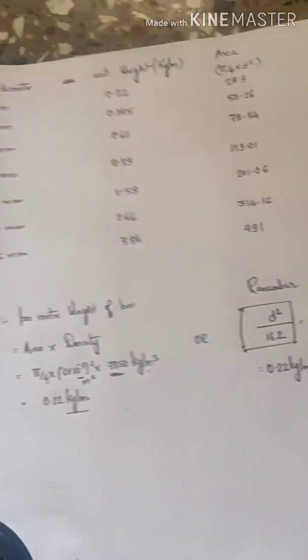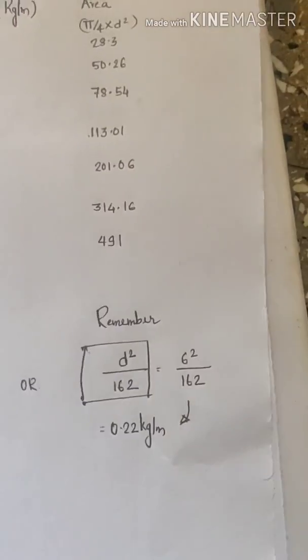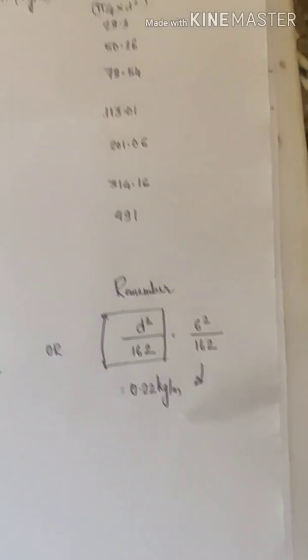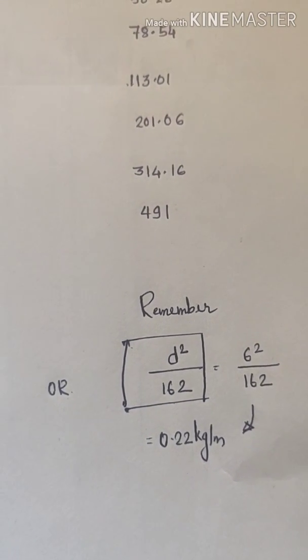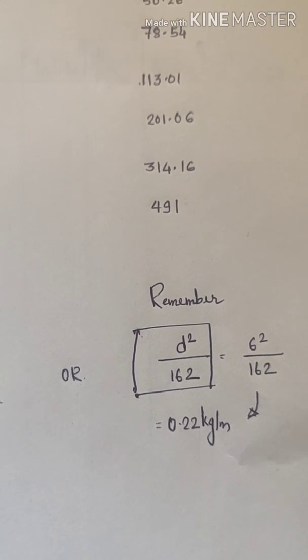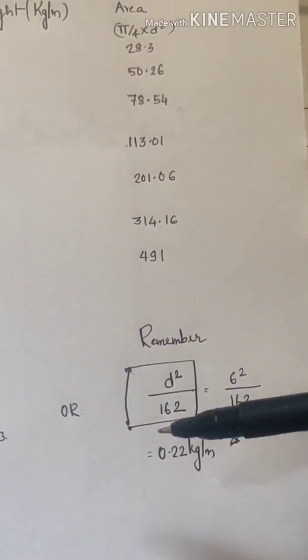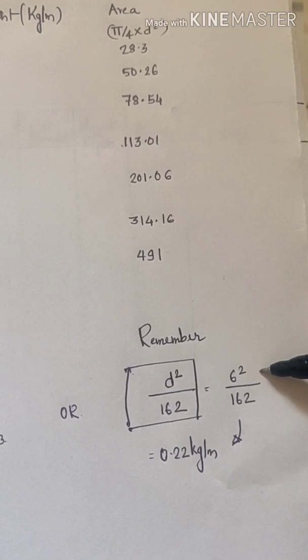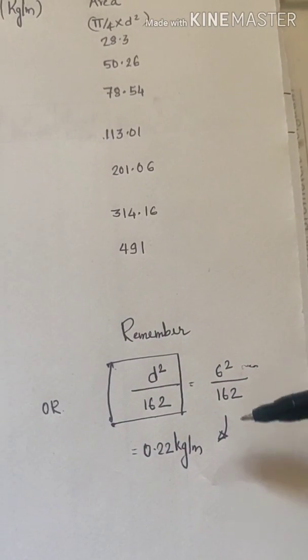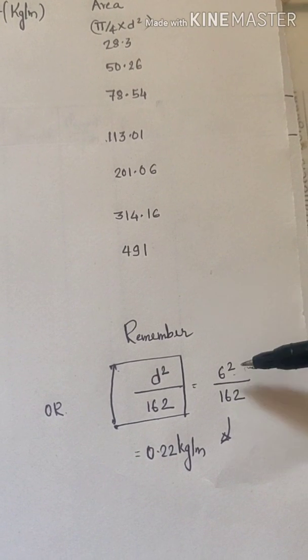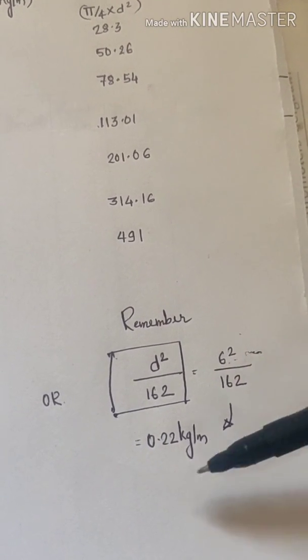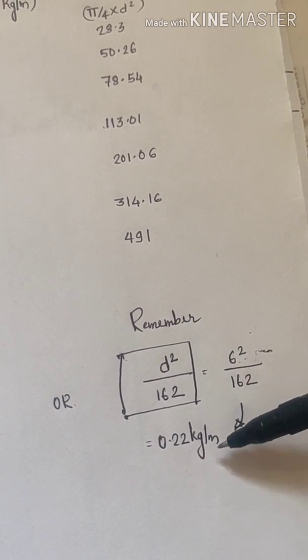We have one more shortcut approach of calculating the unit weight. That is using the relation d square by 162. Here d square should be substituted in terms of mm and divided by 162. So to calculate unit weight of 6mm diameter bar, 6 square by 162, you will get 0.22 kg per meter.